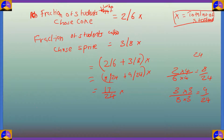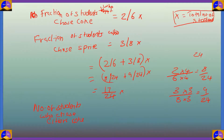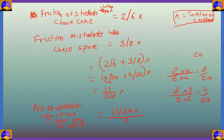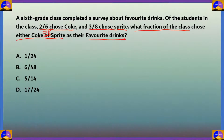To find the fraction of students who chose either Coke or Sprite, we take 17/24 × x divided by the total number of students x. The x cancels, giving us 17/24, which is option D.